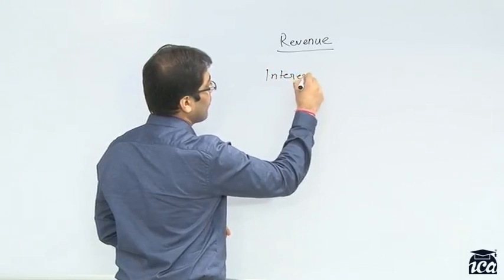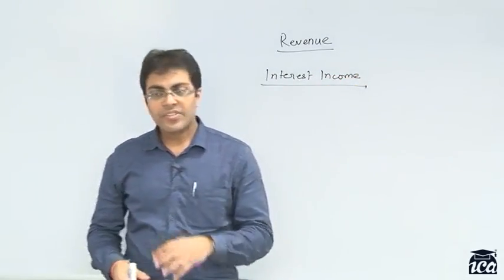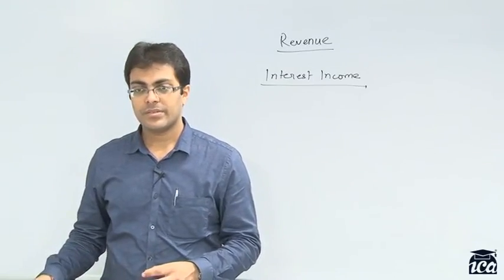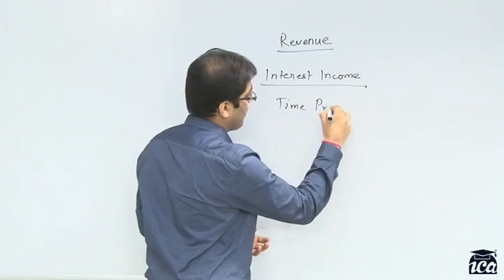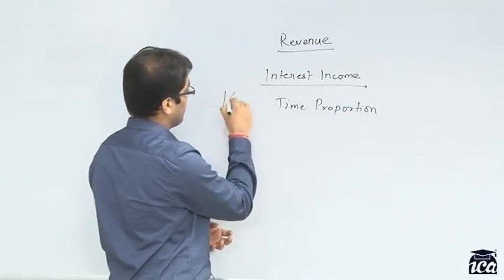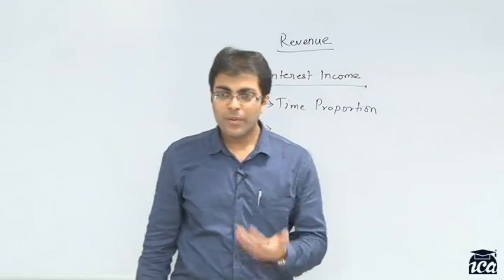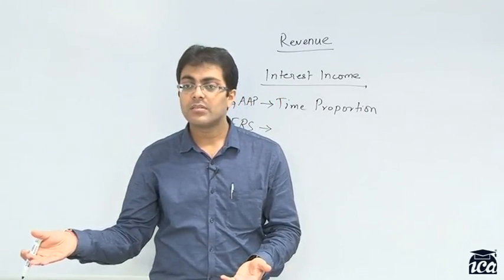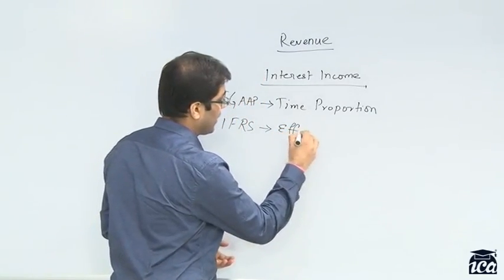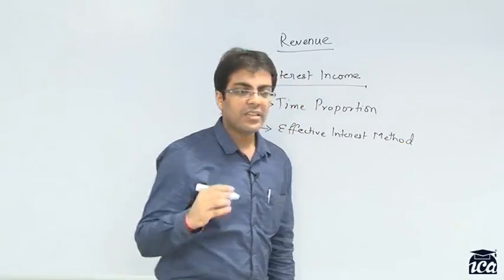Let us move to interest income. In case of interest income, under the Indian GAAP the interest income is recognized on a time proportion basis. However, under IFRS, remember we have talked about the method. What method is talked about? Fair value which leads to a particular method. Effective interest method. So IFRS talks about effective interest method to be followed for recognizing interest income.